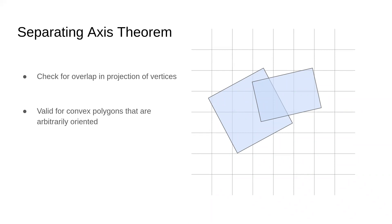The separating axis theorem states that if you can find an axis that separates the projection of two convex shapes, then an overlap does not exist between the two shapes. This approach generalizes to our problem because it can check for overlap between convex polygons that are arbitrarily oriented.